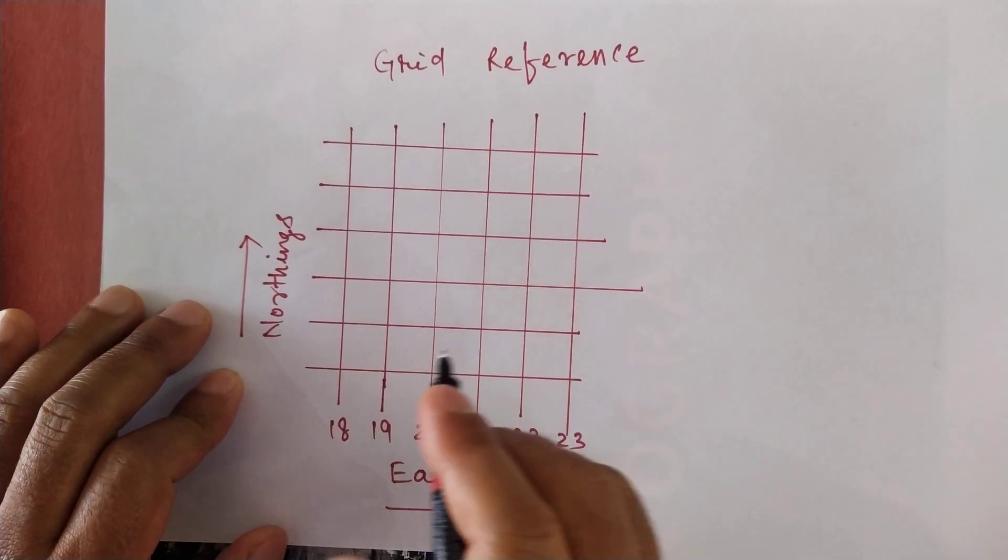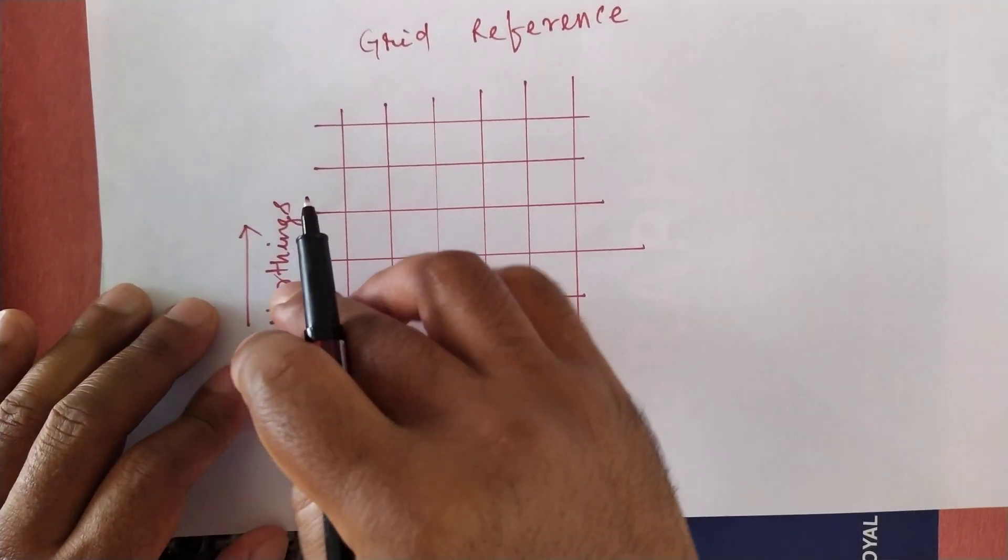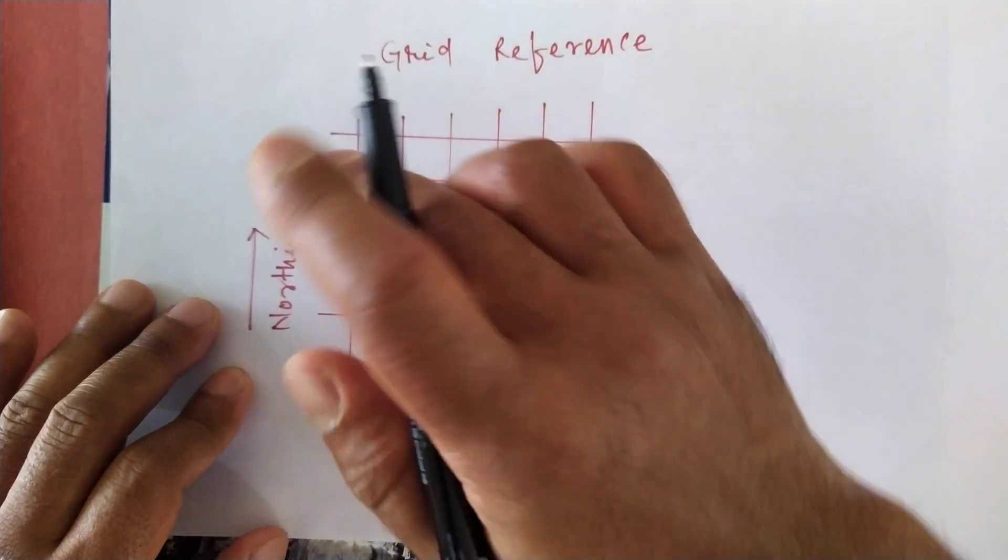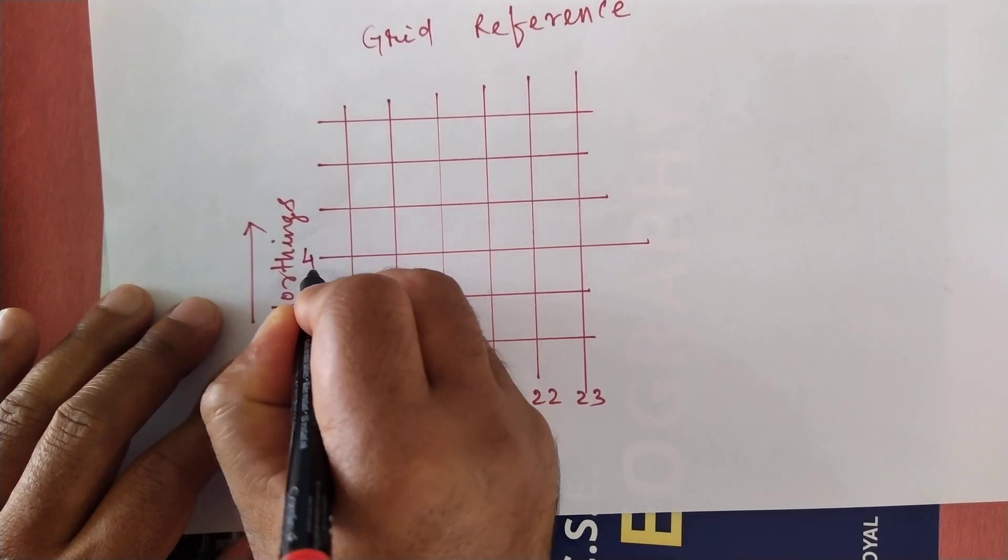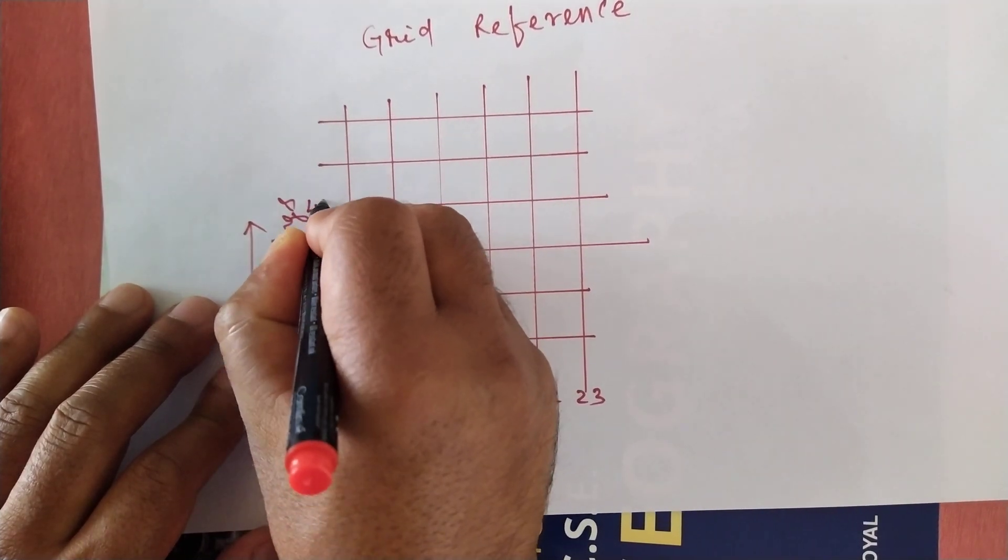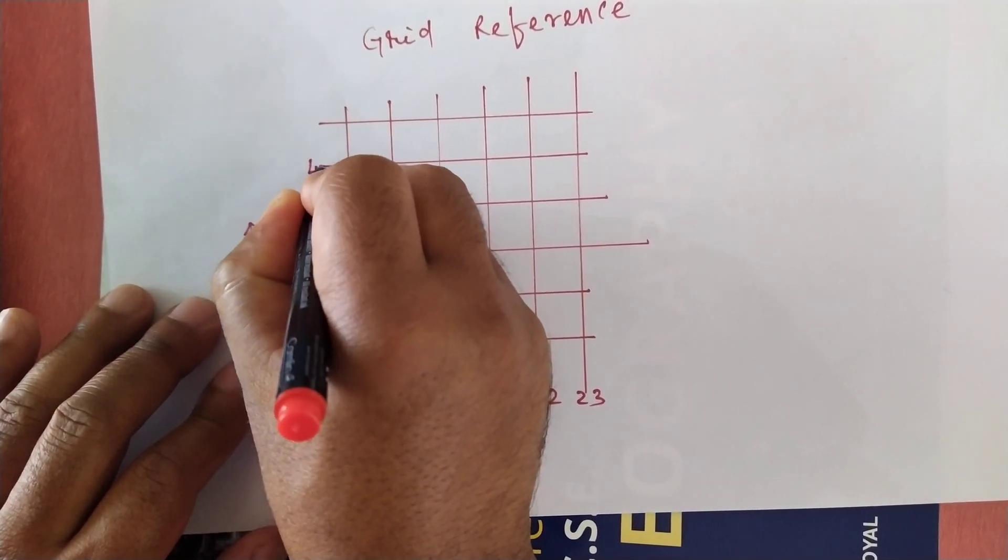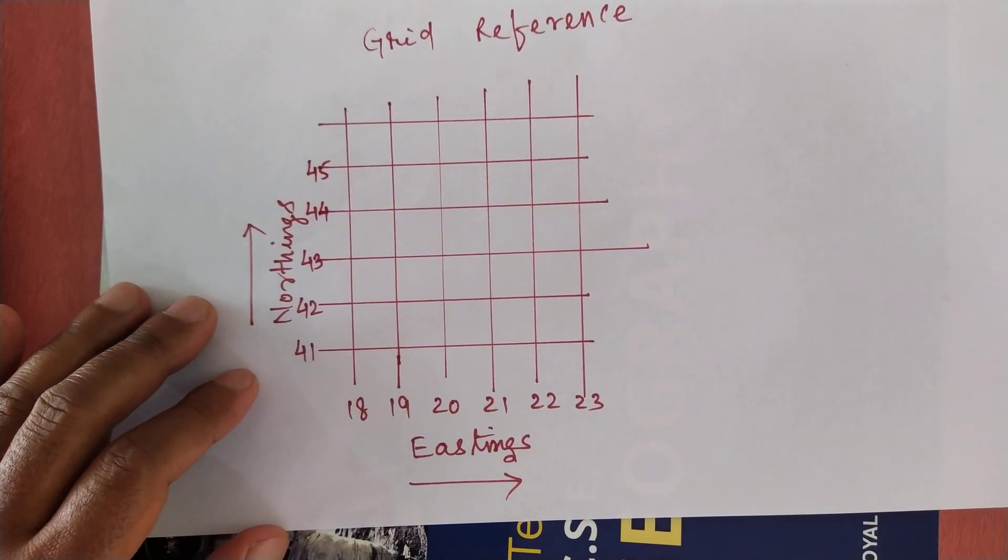East to West, and the numbers will be increasing towards the North side: 41, 42, 43, 44, 45.